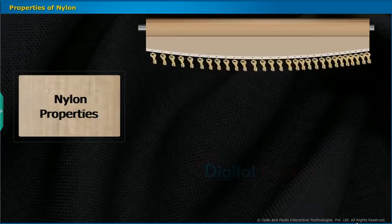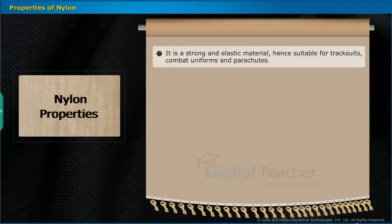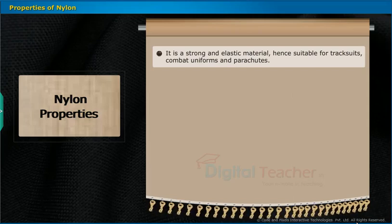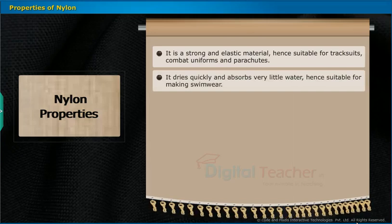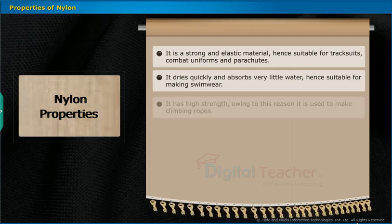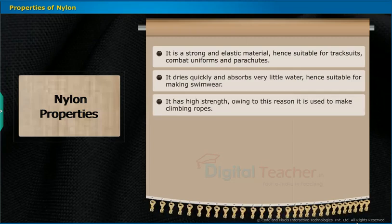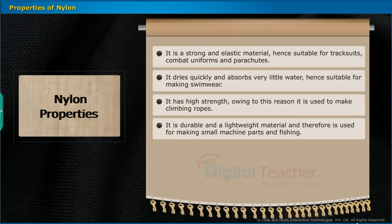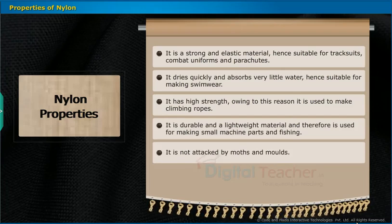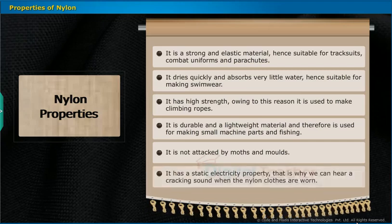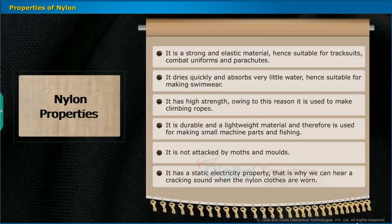Properties of Nylon: It is a strong and elastic material, hence suitable for tracksuits, combat uniforms and parachutes. It dries quickly and absorbs very little water, hence suitable for making swimwear. It has high strength and is used to make climbing ropes. It is durable and lightweight, therefore used for making small machine parts and fishing lines. It is not attacked by moths. It has a static electricity property — that is why we can hear a cracking sound when nylon clothes are worn.